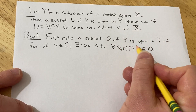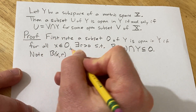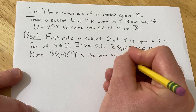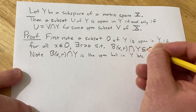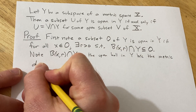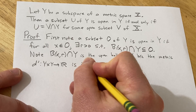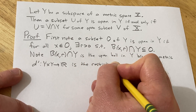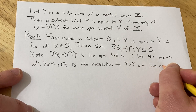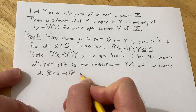I want to make the point that B(x,r) intersected with Y is actually the open ball in Y. This is because Y is a subspace, so the metric d′ from Y cross Y into ℝ is the restriction to Y cross Y of the metric d from X cross X into ℝ on X.